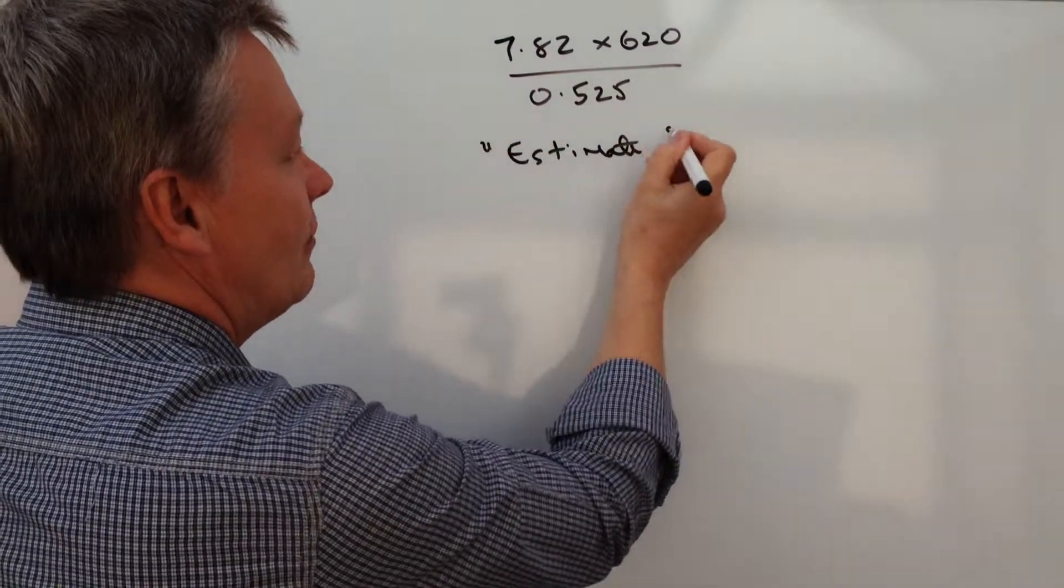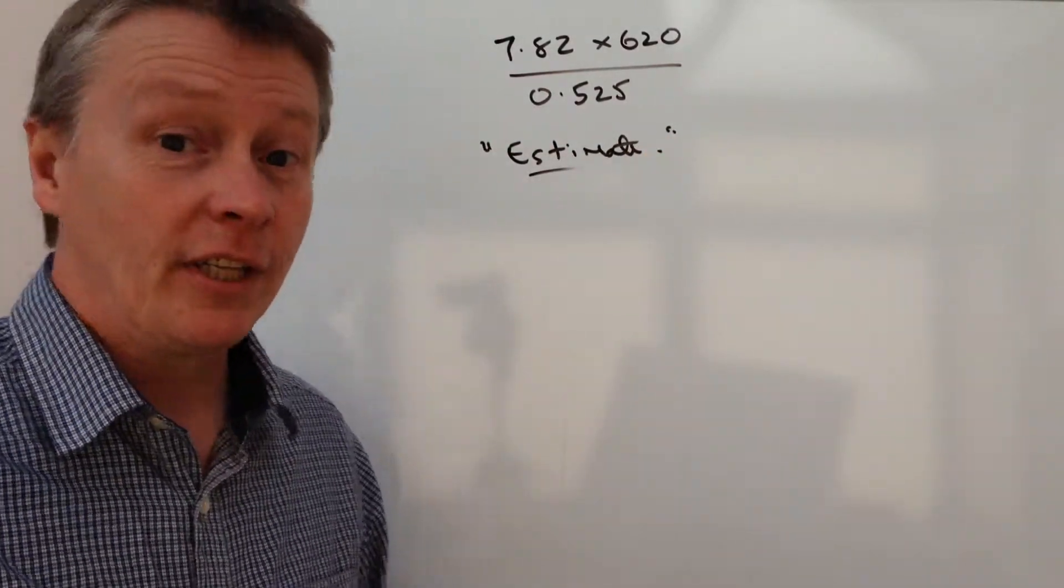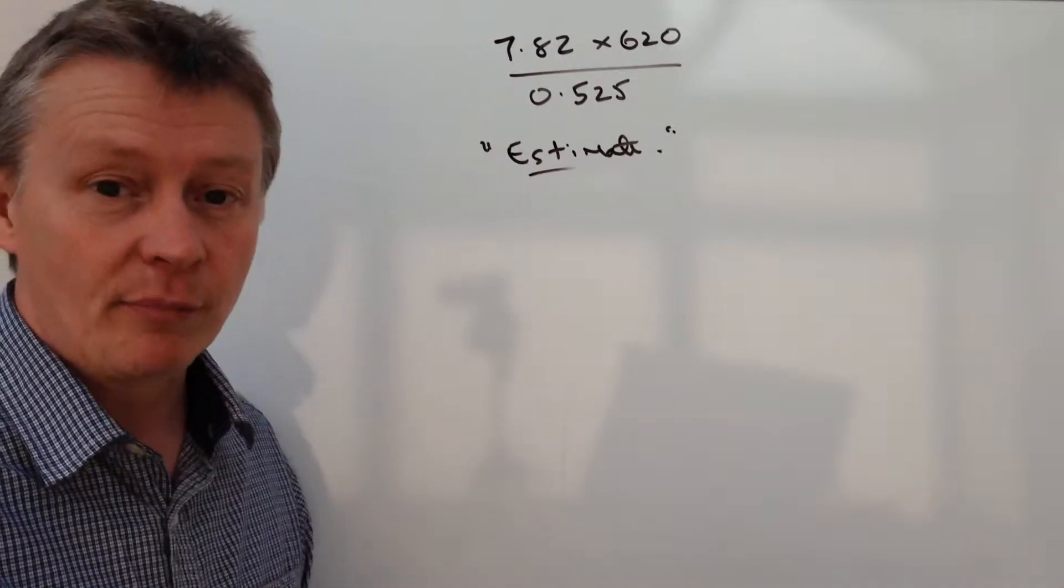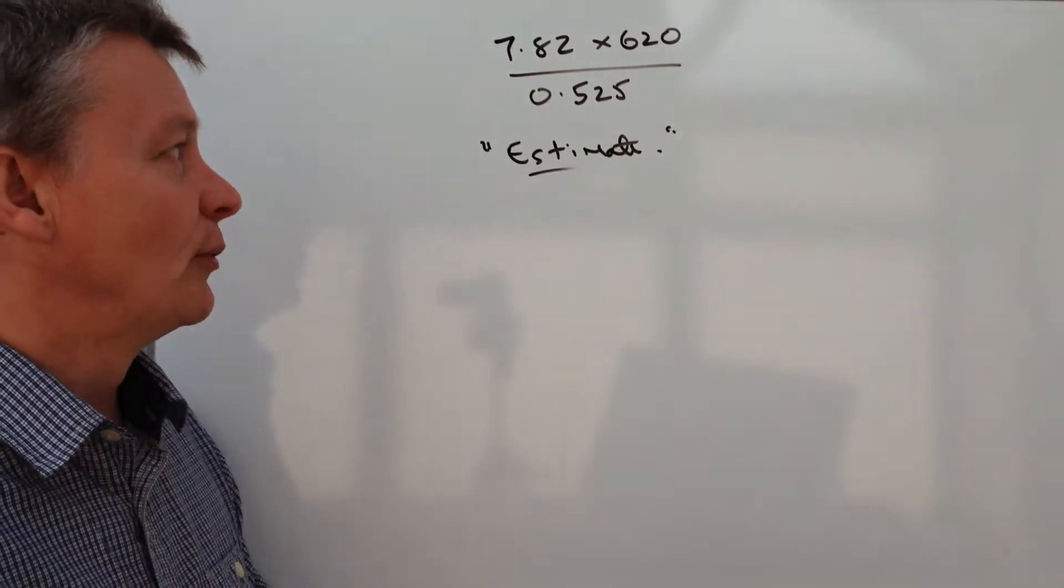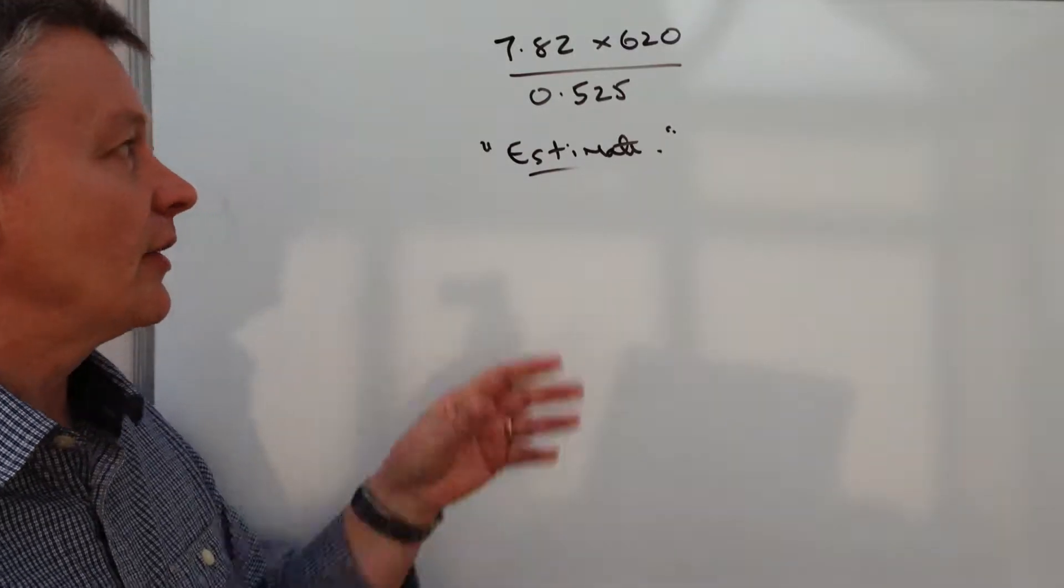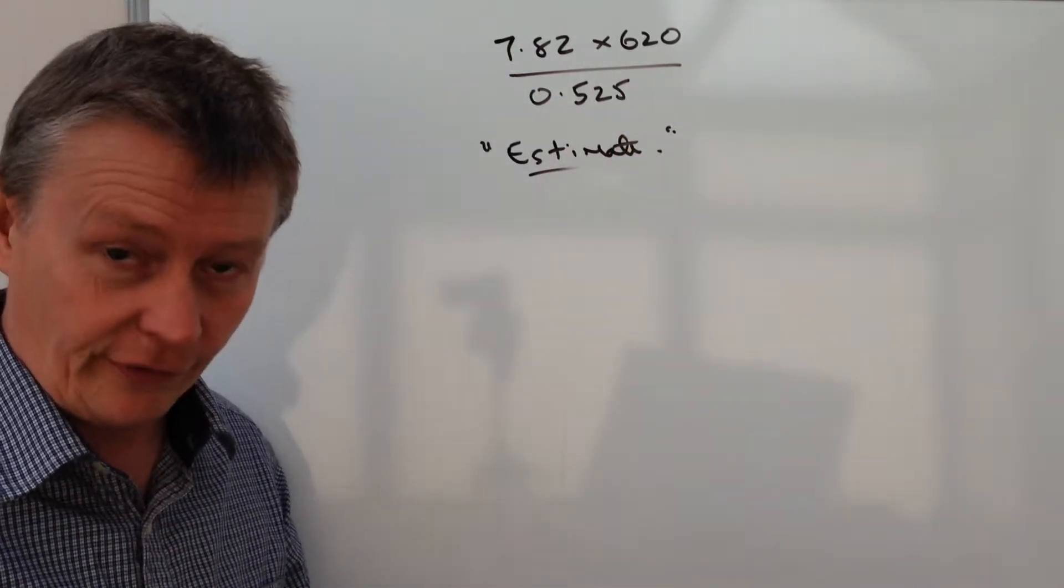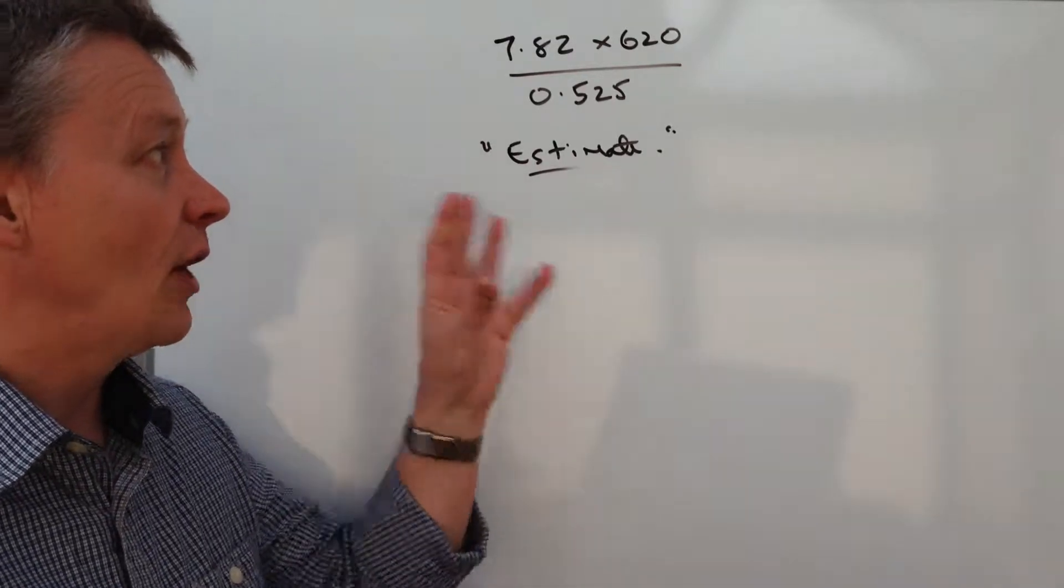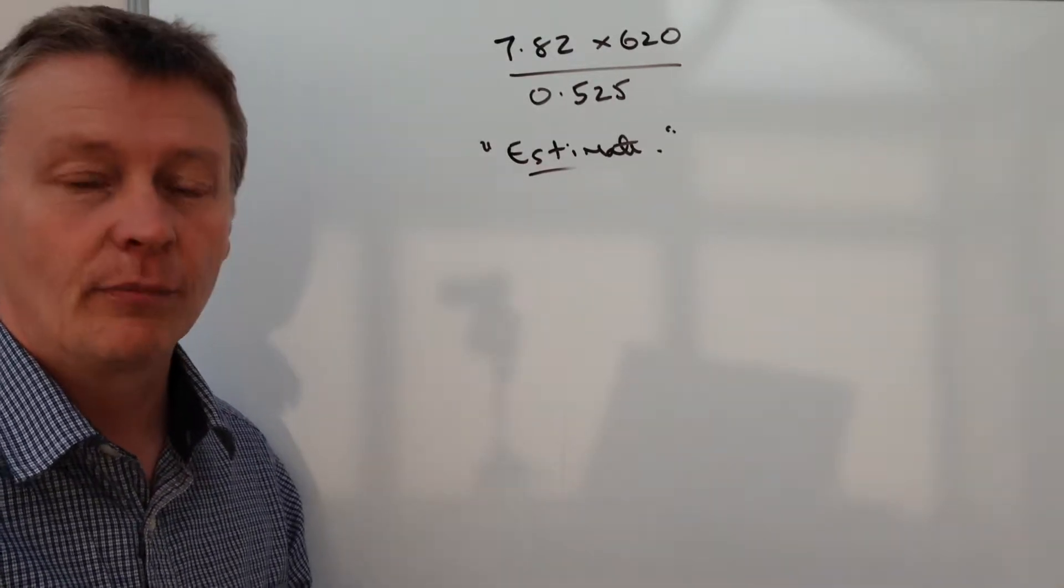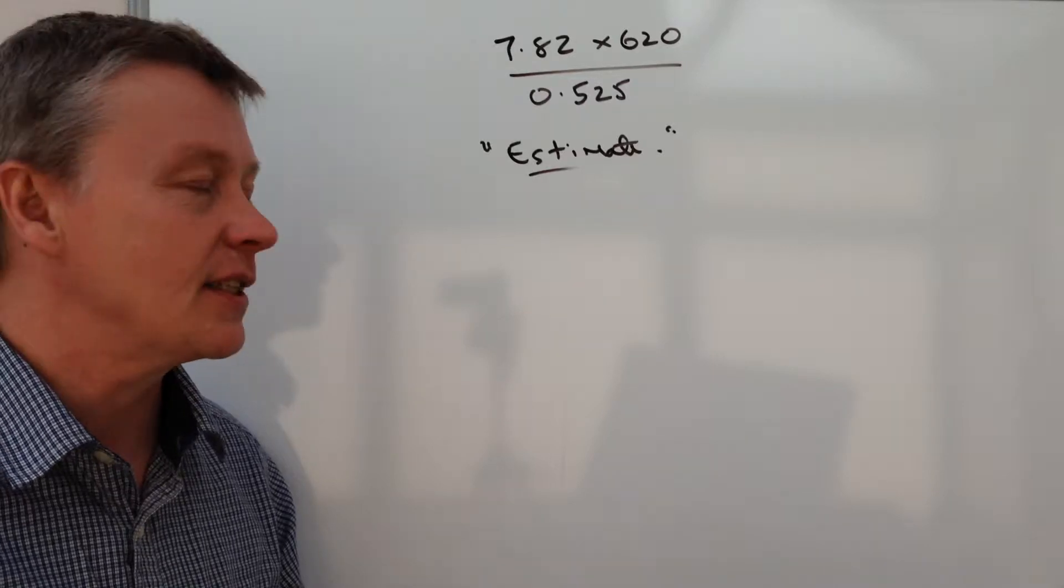So it's an estimate. They usually appear on non-calculator papers. They're fairly straightforward, but what you need to be looking at is trying to round each of these numbers to perhaps one significant figure, or to round the numbers in such a way that it'll make your calculation a little bit easier.